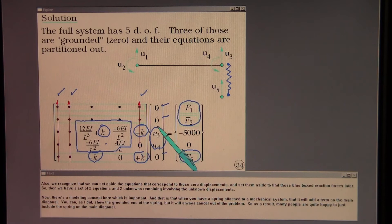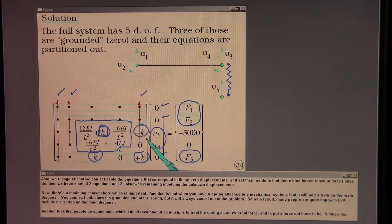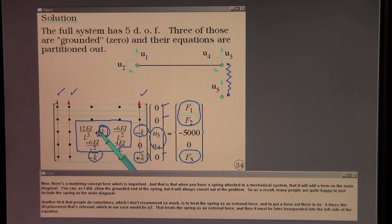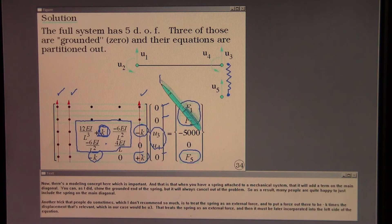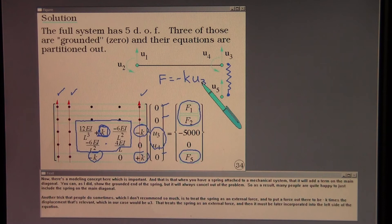Now there's a modeling concept here which is important and that is that when you have a spring attached to a mechanical system that it will add a term on the main diagonal. You can, as I did, show the grounded end of the spring but it will always cancel out of the problem. So as a result, many people are quite happy to just include the spring on the main diagonal. Another trick that people do sometimes which I don't recommend so much is to treat the spring as an external force and to put a force out there to be minus k times the displacement that's relevant. Which in our case would be U3. That treats the spring as an external force and then it must be later incorporated into the left side of the equation.